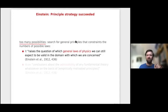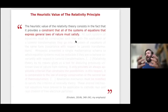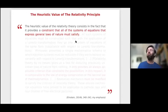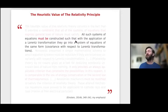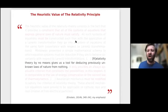When there are too many possibilities, it is better to search for general principles that constrain the number of possible laws. The question is: which are the general laws of physics that can still be expected to be valid in the domain we are concerned with? We have to draw conclusions about the admissibility of theories that are compatible with the principle. This is exactly what Einstein learned by working on special relativity. As one particularly clear passage states: 'The heuristic value of relativity theory consists in the fact that it provides a constraint — a general condition — that all systems of equations expressing general laws of nature must satisfy.'